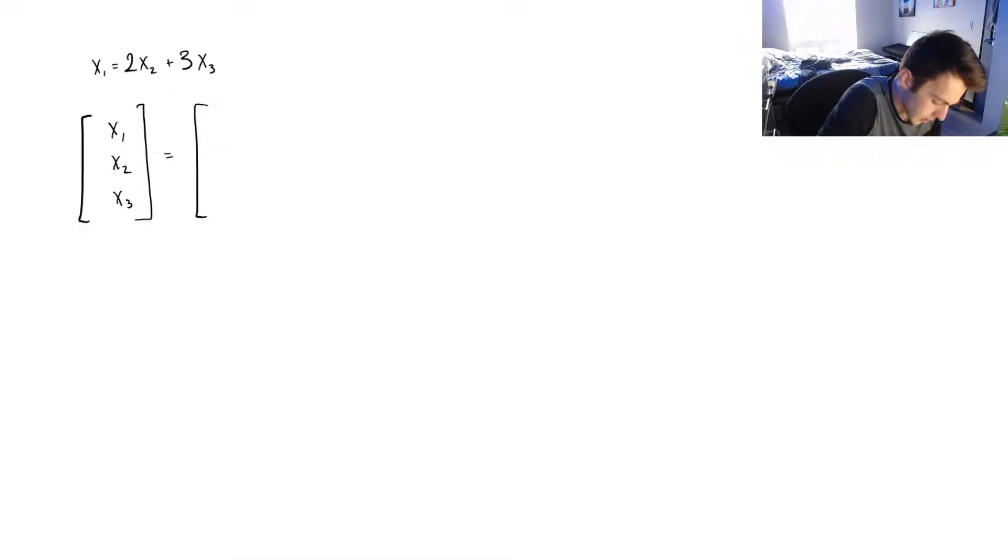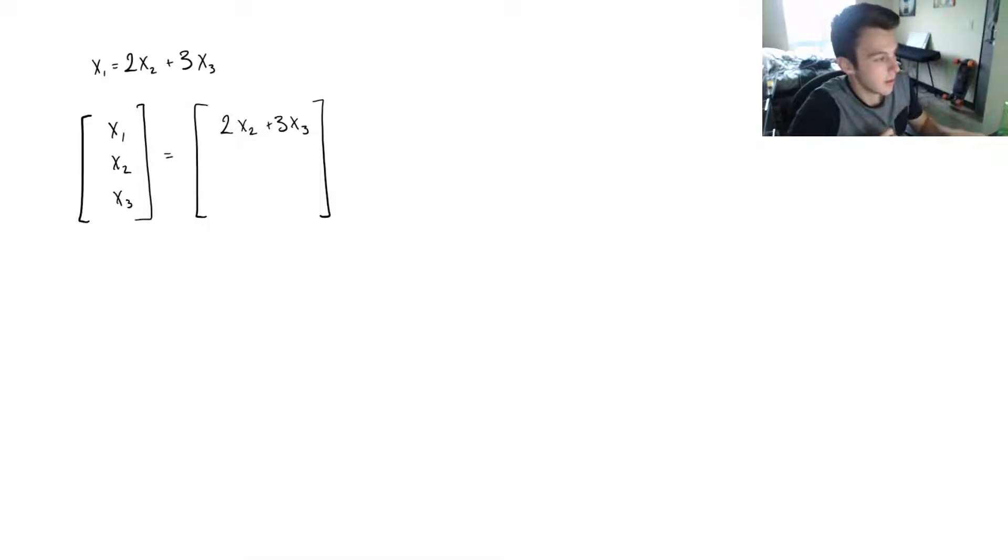So, I know x1 is 2x2 plus 3x3. And x2 and x3, if I just let those be my free variables, meaning that I don't know what they are, then I can just write them in as this x2 and x3. And you'll see that, since these are just numbers, right, I can represent it as x2 times some vector plus x3 times another vector. And remember, this is just, this is exactly what a linear combination is.